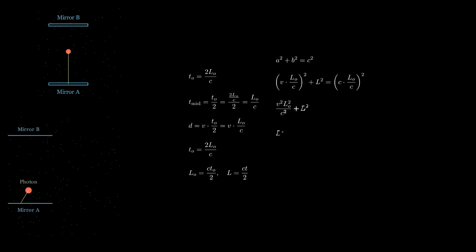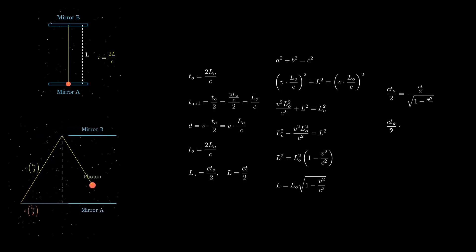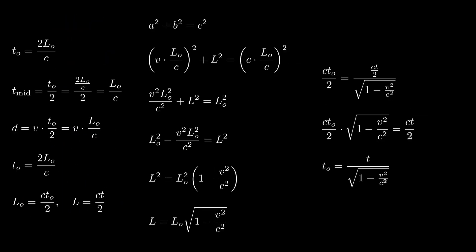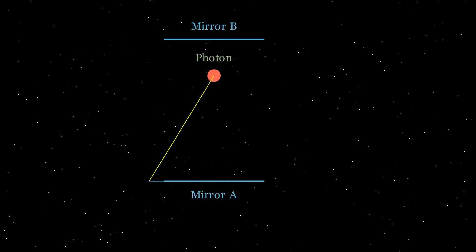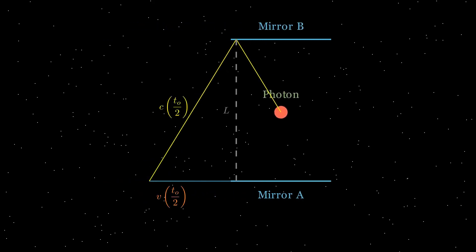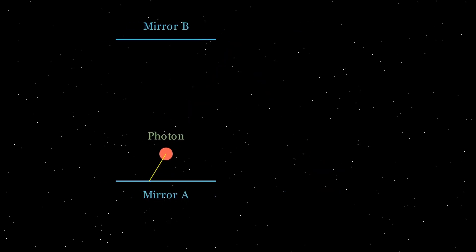Since the photon travels a longer distance in the moving frame and its speed is unchanged, it must take more time to complete its journey. Thus the ticking of the light clock as seen from the stationary frame slows down. This is time dilation. Moving clocks tick more slowly than those at rest.